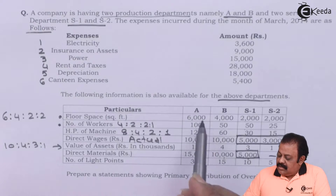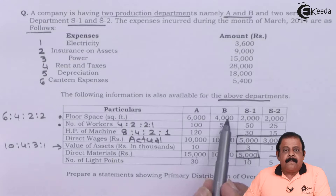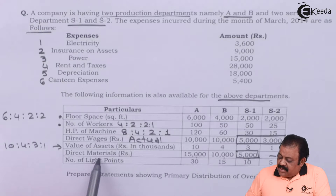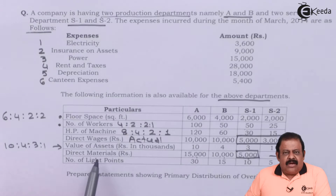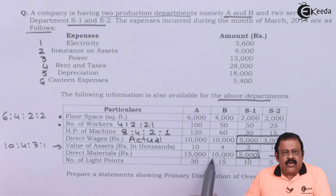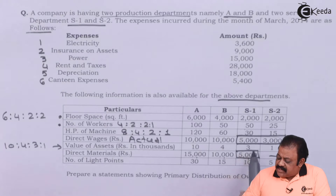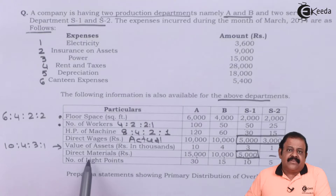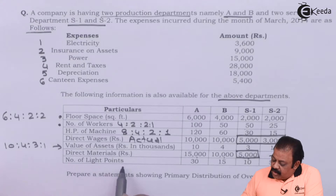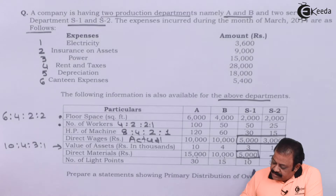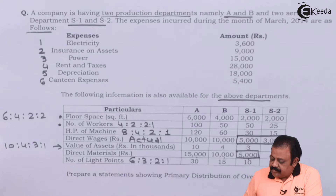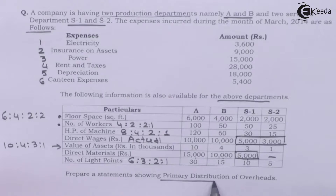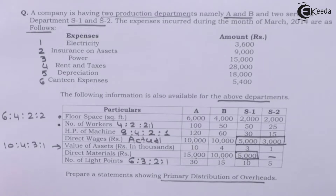In the case of production departments A and B, direct material actual amount will be considered as direct material only. Whereas in the case of Service Department S1, direct material consumed will be considered as overheads and not direct materials. Prepare a statement showing primary distribution of overheads.